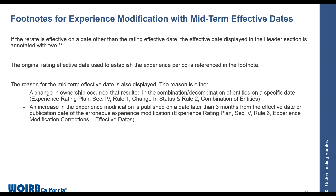The original rating effective date will be referenced in a footnote. You can also identify it by recognizing that the experience period corresponds to four years and nine months and one year and nine months from the effective date. The other instance is where we've revised the experience modification and that revision results in an increased modification that has occurred more than three months from the effective date or publication date of the original experience modification. The experience rating plan directs that in these instances, the mod is effective the date it's published rather than going back to the original effective date.